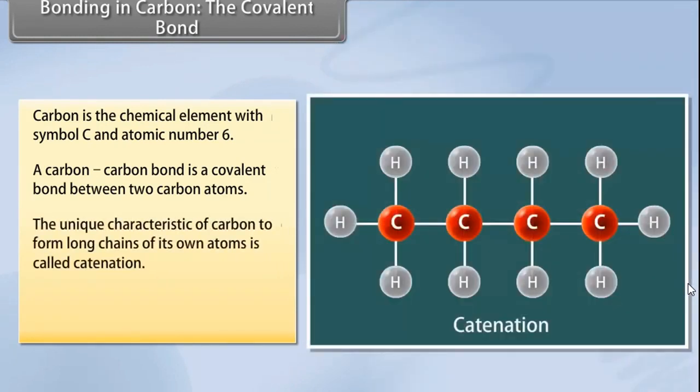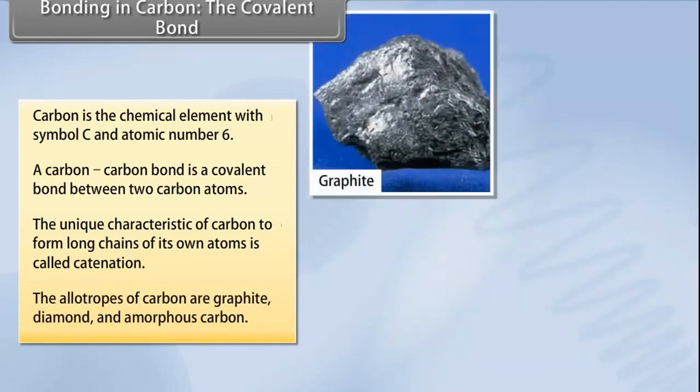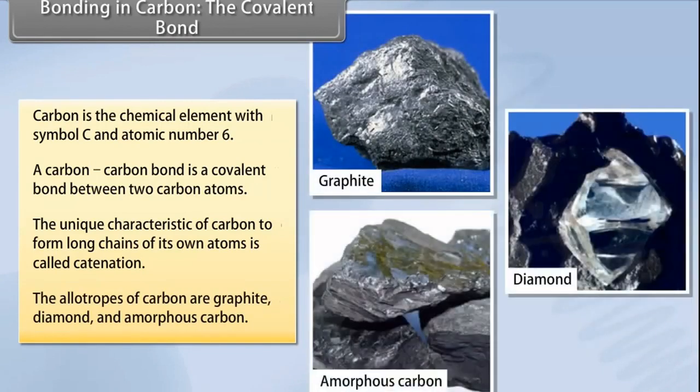Carbon also has the unique characteristic to form long chains of its own atoms. This property is called catenation. The allotropes of carbon are graphite, diamond, and amorphous carbon.